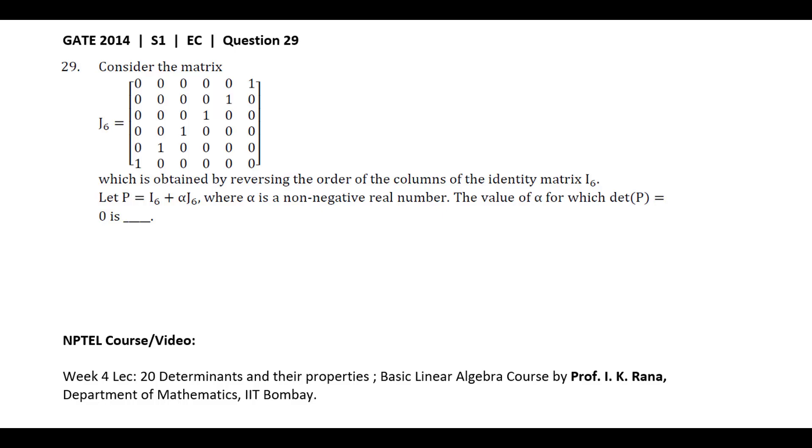Let P equal I6 plus alpha times J6, where alpha is a non-negative real number. We need to find the value of alpha for which the determinant of P equals zero.